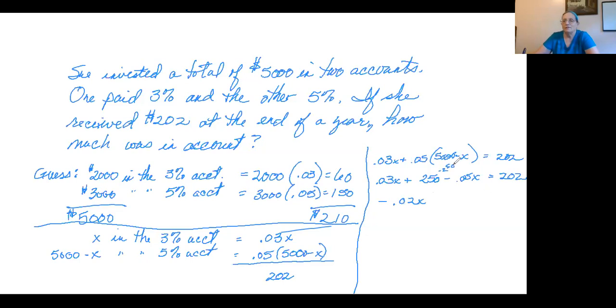If we subtract 250 from both sides, that's going to leave negative 48, 202 minus 250. Let's divide by negative 0.02. That's going to give us X is 2,400.